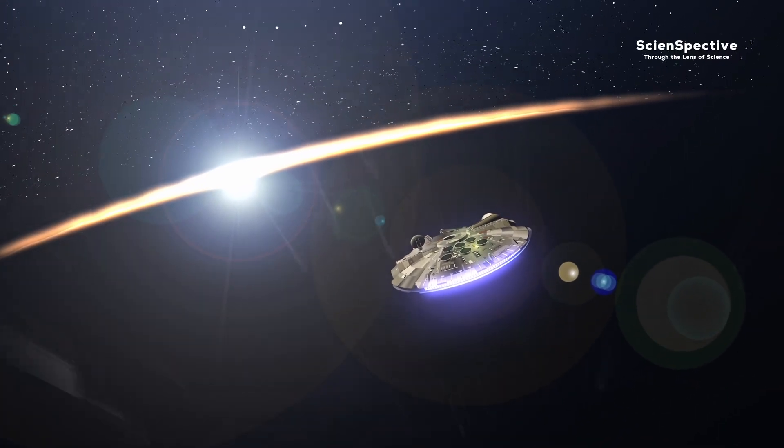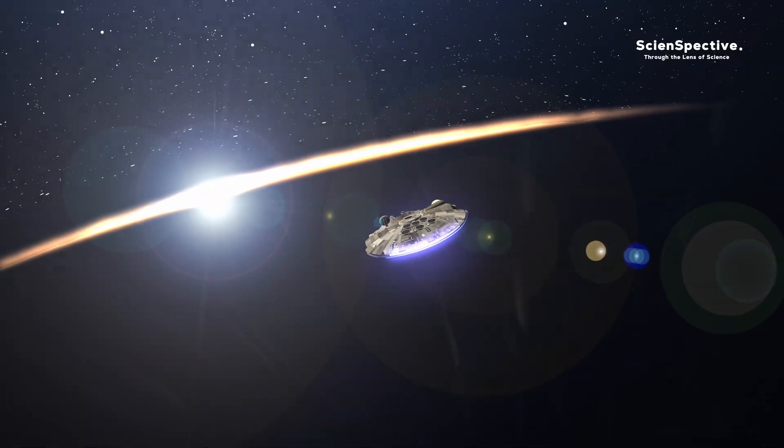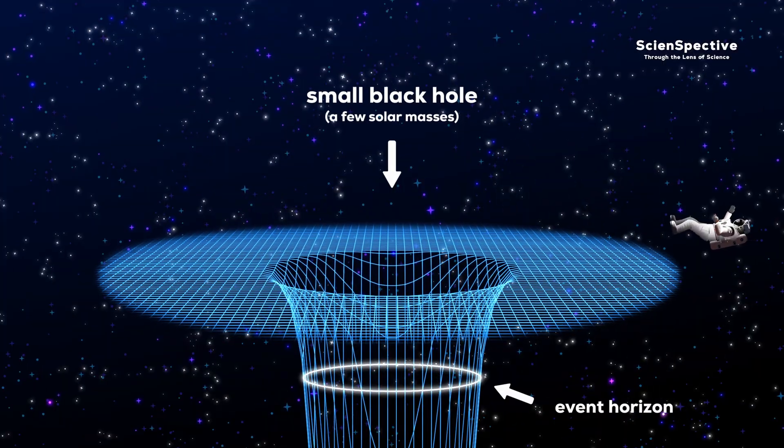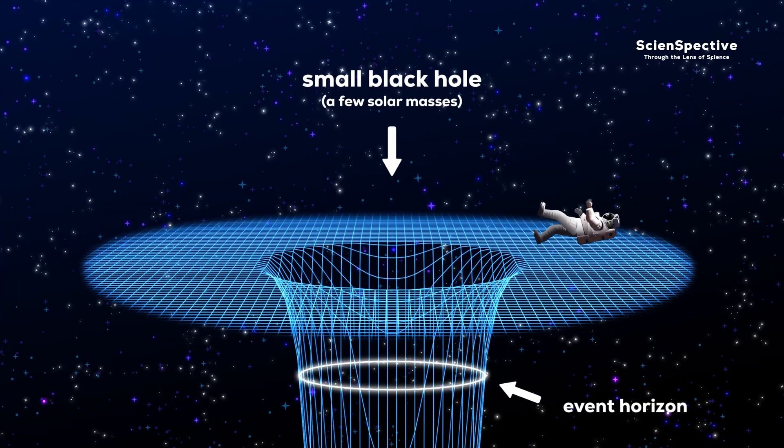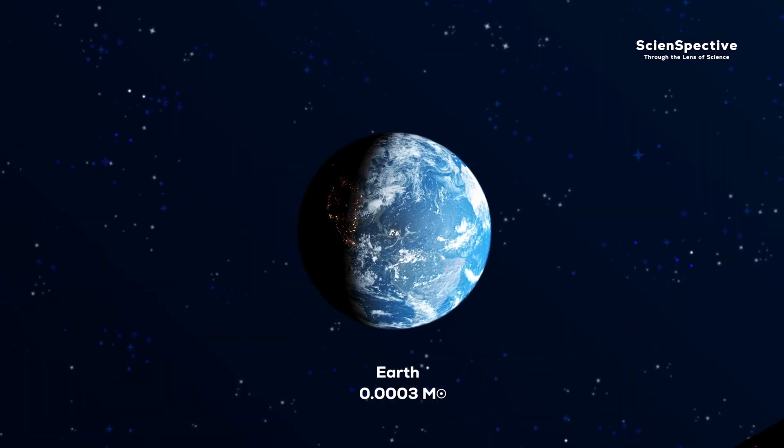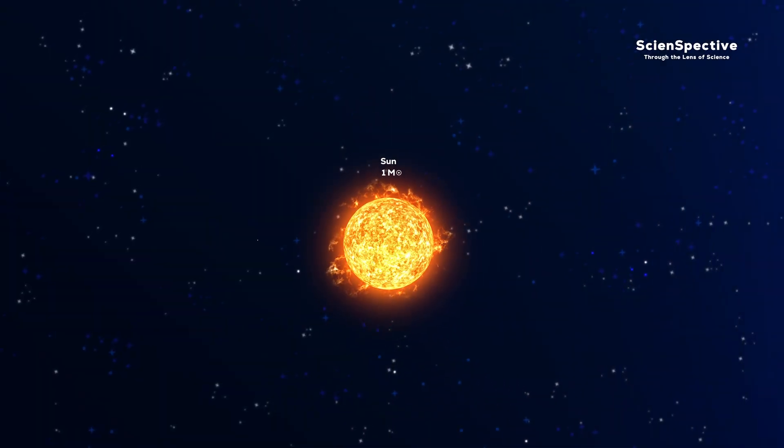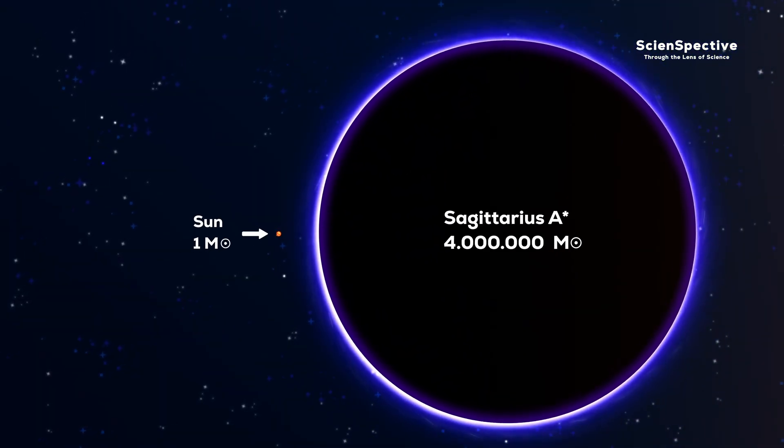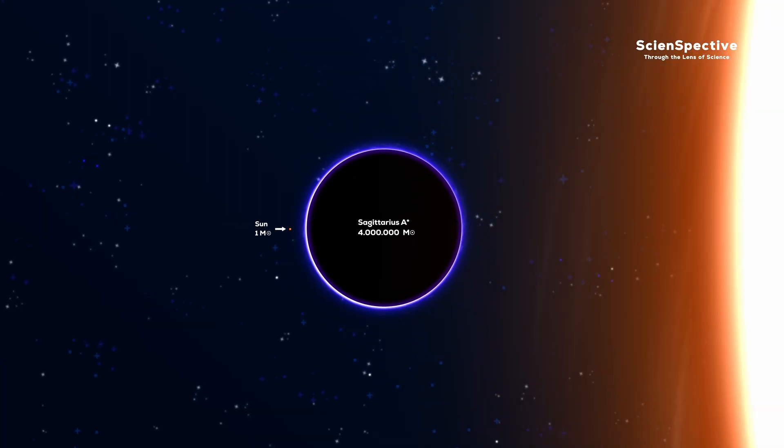But not all black holes tear stars apart or spaghettify us before we cross the event horizon. Only small ones do, because smaller black holes have event horizons closer to their centers, meaning their tidal forces are stronger. Small black holes may have only a few solar masses, but much larger ones exist. At the center of our galaxy is a supermassive black hole with over 4 million solar masses, and it's almost certain that every galaxy contains a massive black hole at its core.